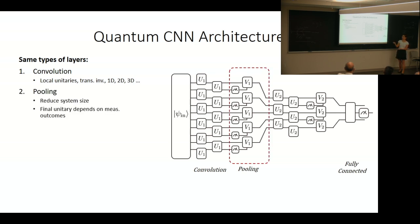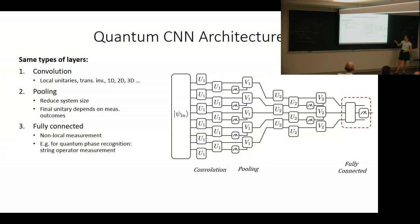The pooling layers reduce system size by measuring a fraction of the qubits. Based on the measurement outcomes, we determine the unitary operations to apply to the remaining qubits. The fully connected layers are non-local measurements.